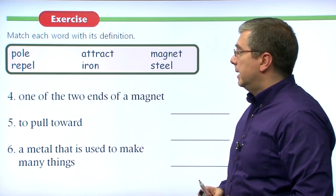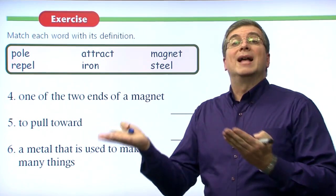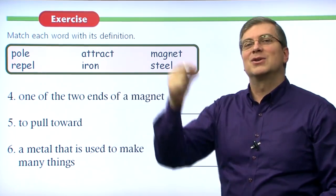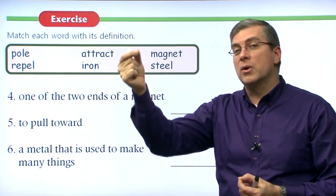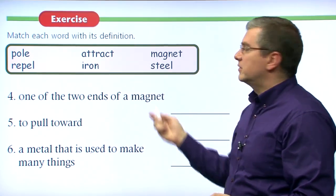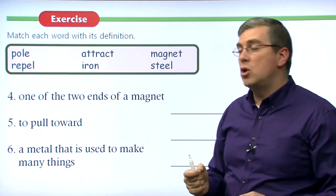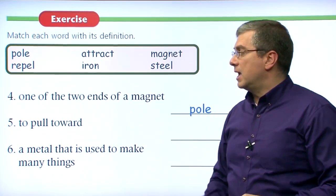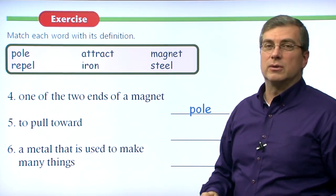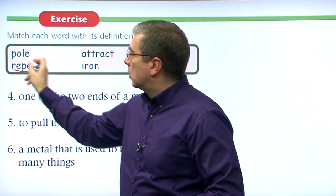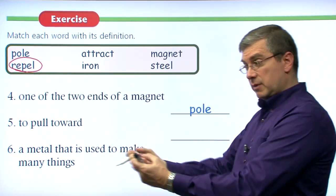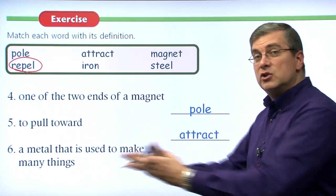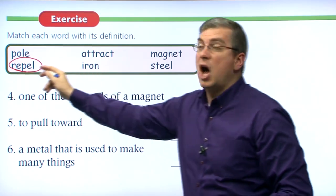Number four: one of the two ends of a magnet. The Earth actually is a huge magnet with two different ends — the north end and south end, same thing with a magnet. So a pole is one of the two ends of a magnet. Number five: it's the opposite of repel — to pull towards something. If a magnet is pulling iron or steel towards it, it is attracting. Attract means to pull toward; it's the opposite of repel. Attract and repel are opposites.